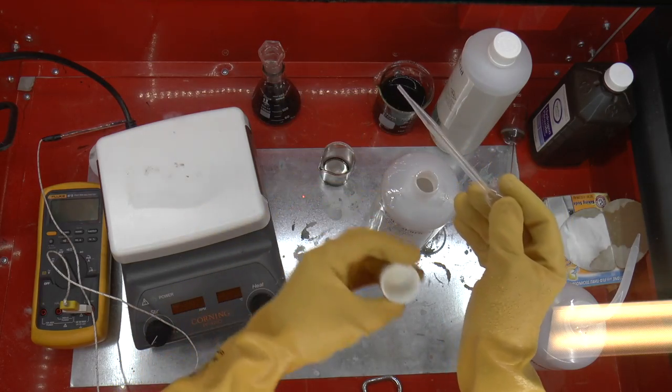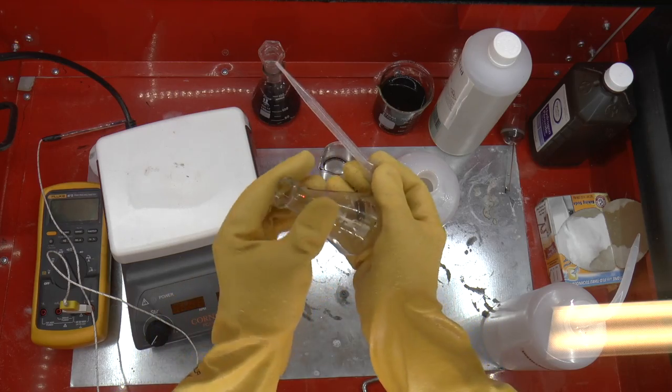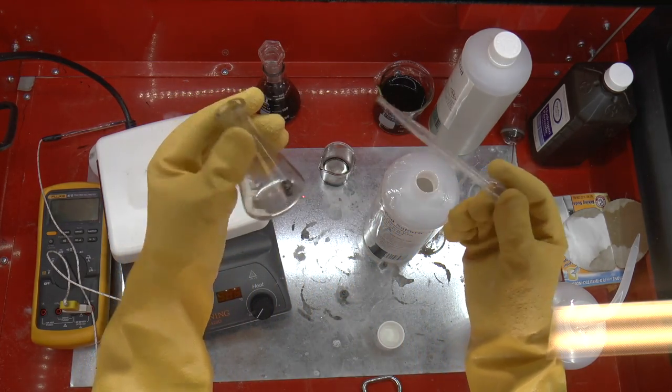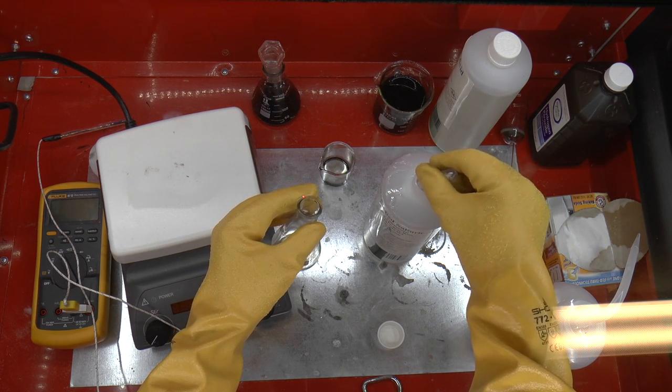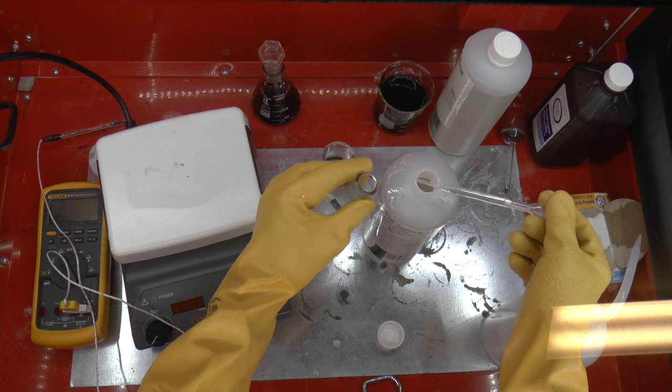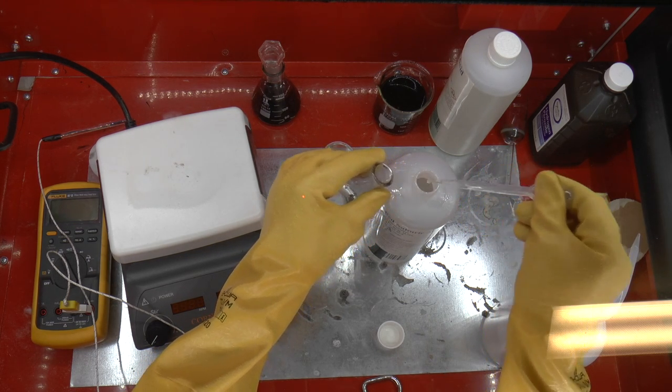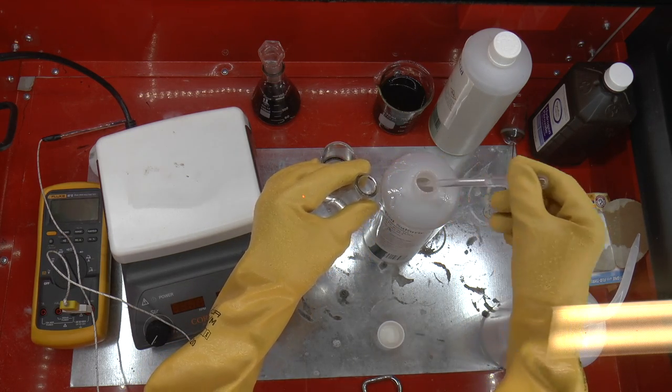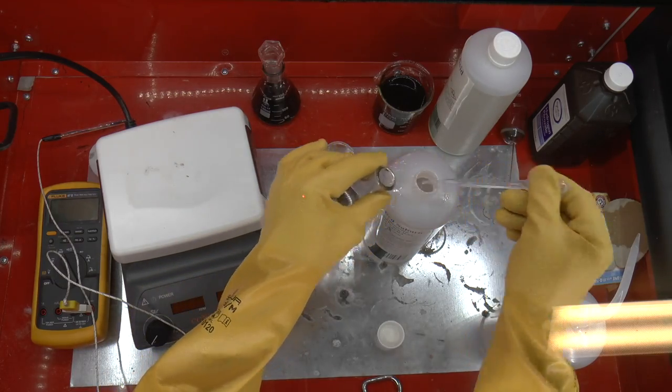We're just going to dump some in, about 2 or 3 milliliters at a time, up to about 20 milliliter level. This is just enough to cover the chip. So here we go with the first 2 or 3 milliliters. This can get boring pretty quickly, so we're just going to speed up time and drop some acid into the beaker.